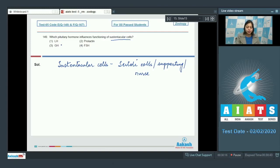LH, that is luteinizing hormone, is incorrect as luteinizing hormone influences the cells of Leydig to release testosterone. Number 2. Prolactin is incorrect as prolactin is the hormone which stimulates the formation of milk in mammary glands. Number 3. Growth hormone is also incorrect as growth hormone is responsible for growth of the body.